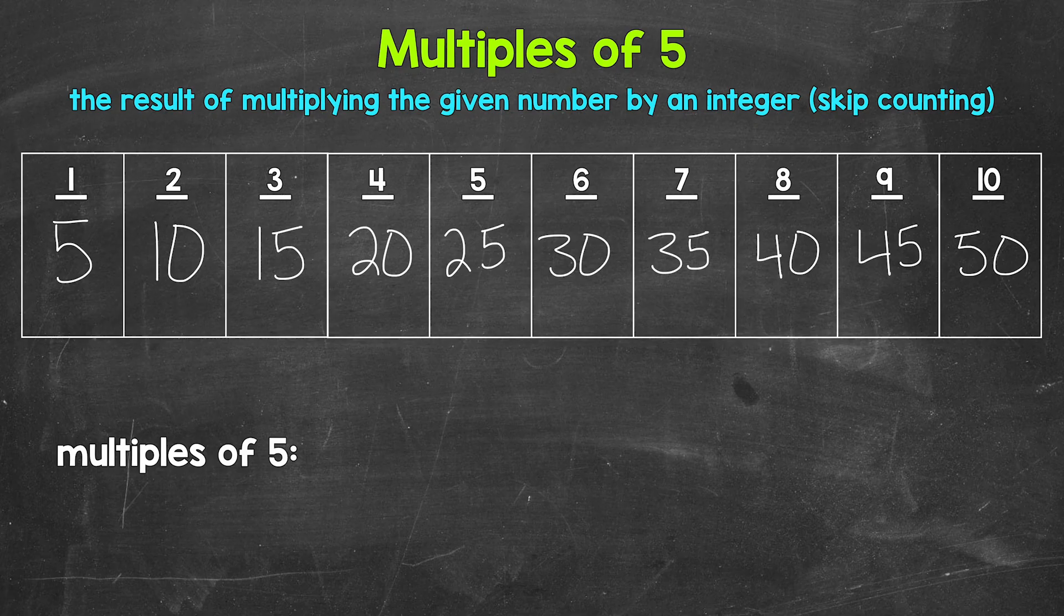Now do multiples stop there? No. They continue on forever. Multiples are infinite. Now let's write these multiples in a list below. And you'll notice we're just counting up by 5. Like I mentioned earlier, another way to think of multiples is to skip count.